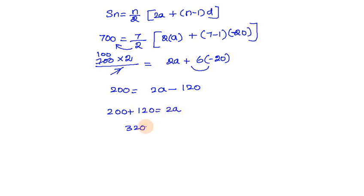Simplifying: 700 = 7/2 × [2a - 120]. This gives us 200 = 2a - 120, so 320 = 2a, therefore a = 160. The first prize is ₹160.